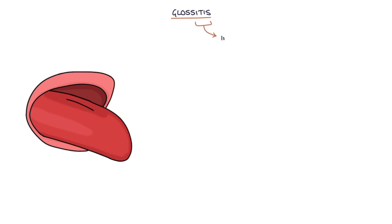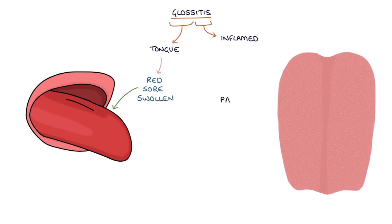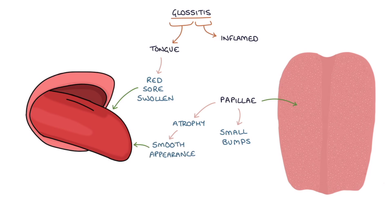Glossitis refers to an inflamed tongue. The tongue becomes red, sore and swollen. The papillae of the tongue, which are the small bumps on the tongue, atrophy, which means they shrink, giving the tongue a smooth appearance. Sometimes the tongue can be referred to as beefy.